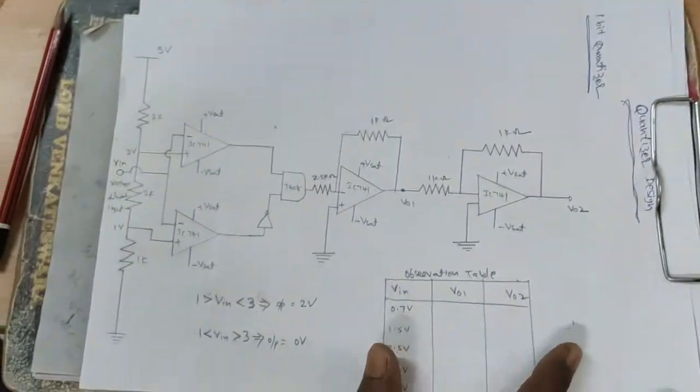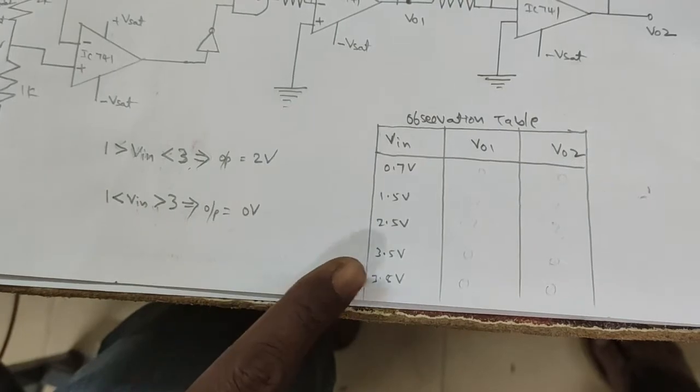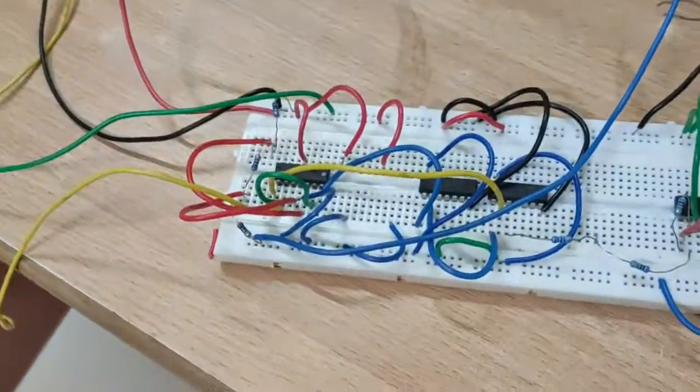This is the observation table. Here V in is varying: 0.7, 1.5, 2.5, 3.5, and 3.8 volts. This is the same circuit connected on the breadboard. Just supply the power supply.